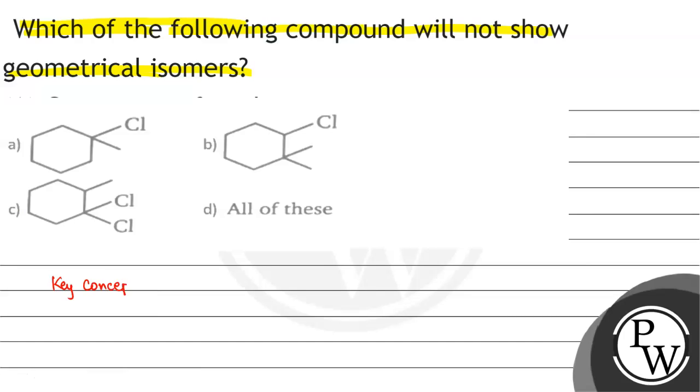The key concept within the question will be geometrical isomerism. Geometrical isomerism show ne ke liye kya hona chahiye? Three conditions satisfy hona chahiye.